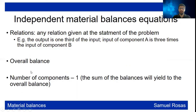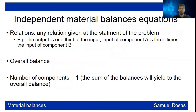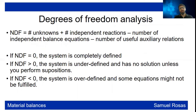With two components, one component balance can be used — either sodium hydroxide or water. You can also perform a degrees of freedom analysis: number of unknowns plus independent reactions minus the number of independent balance equations minus the number of useful auxiliary relations.